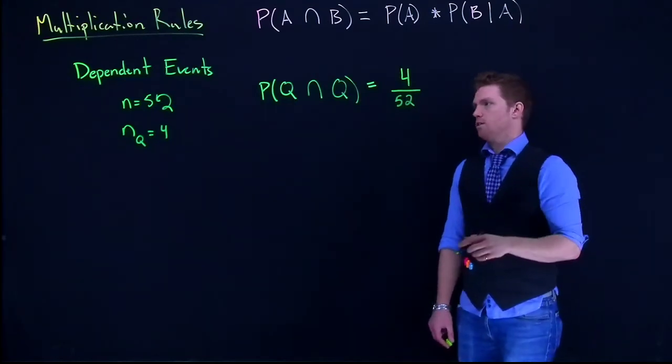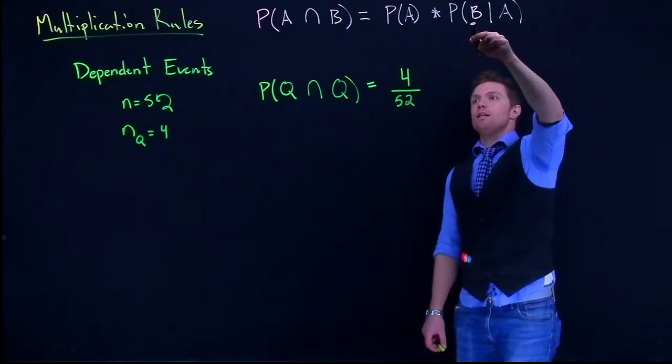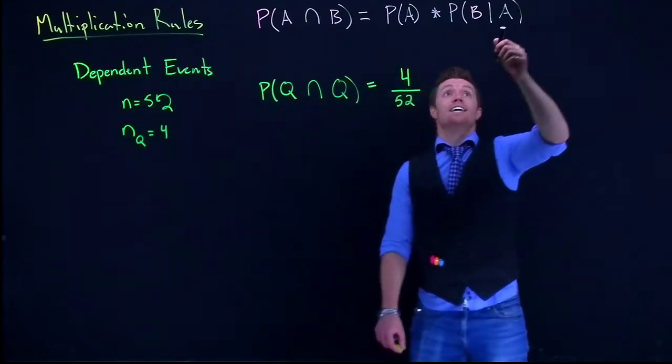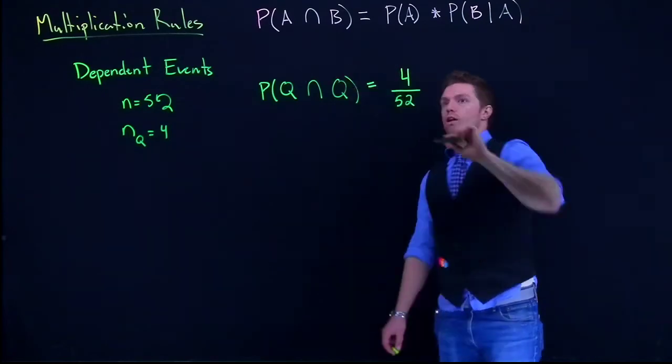Okay, fantastic. Now the question is, what's the probability of B occurring? Or what's the probability of drawing a queen given that we have already drawn a queen?